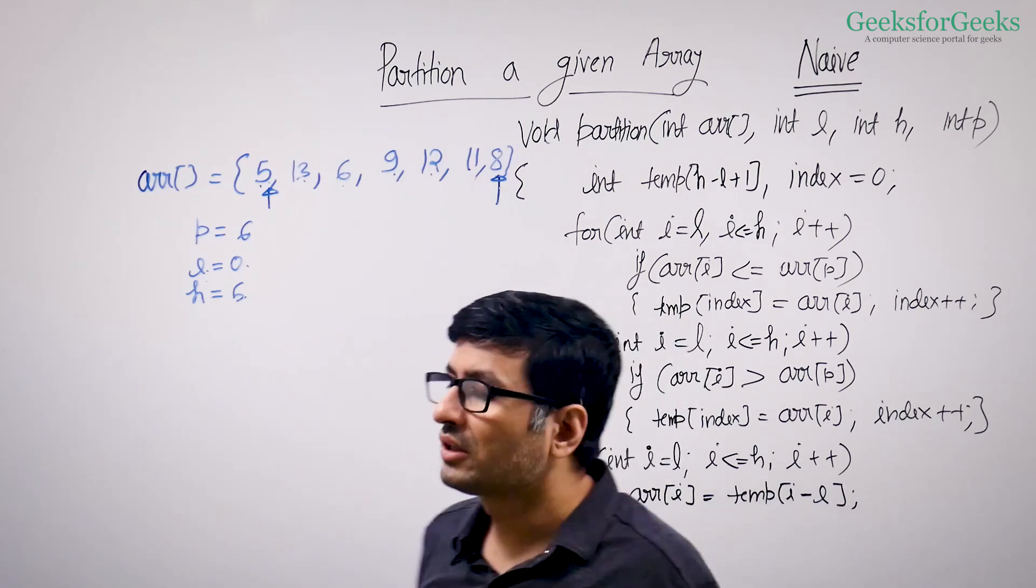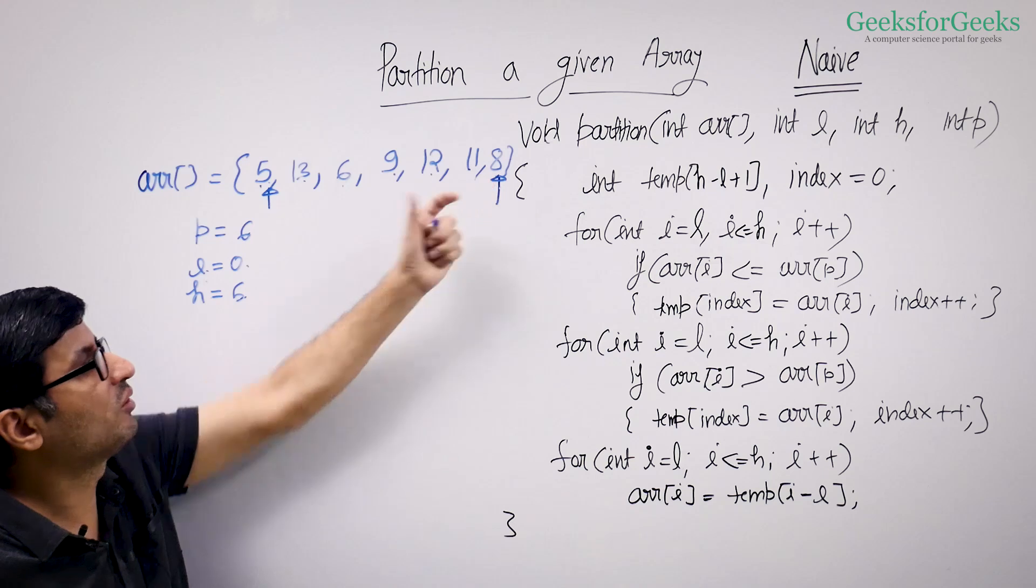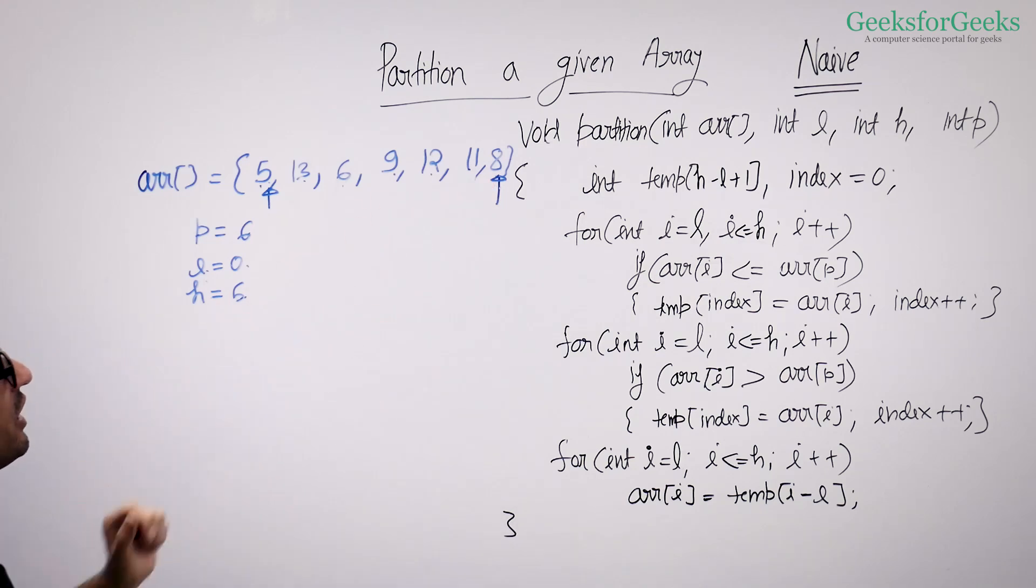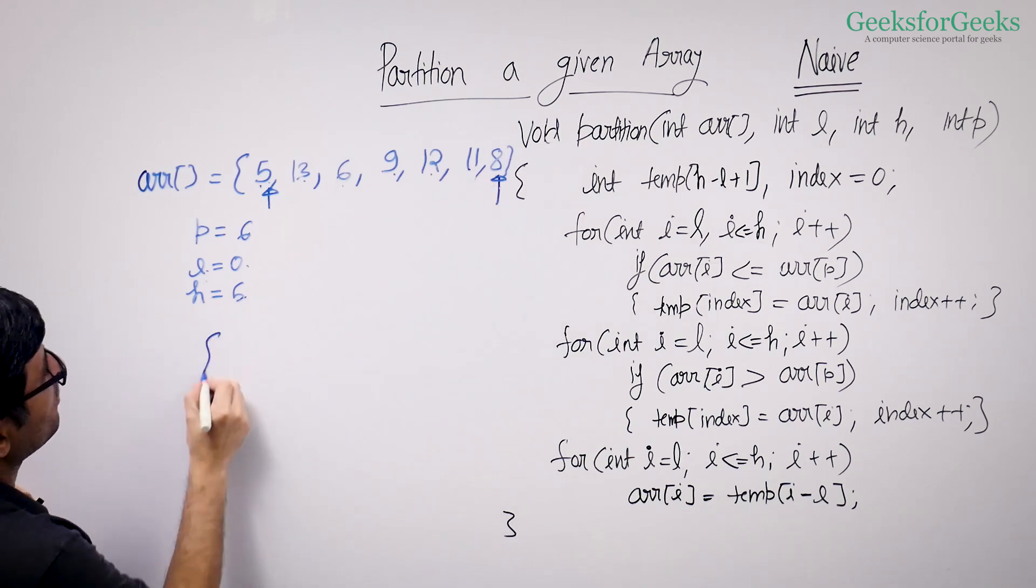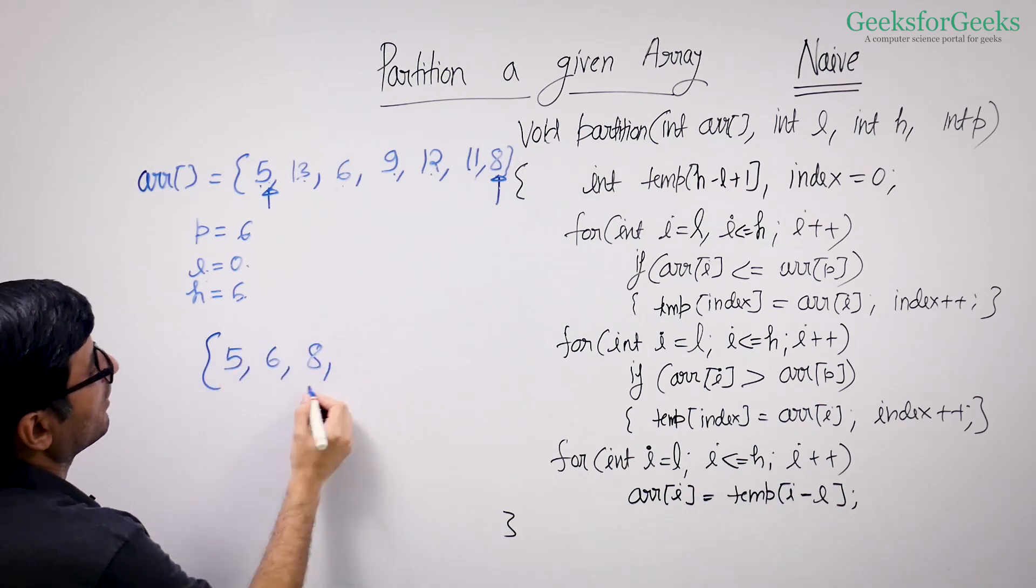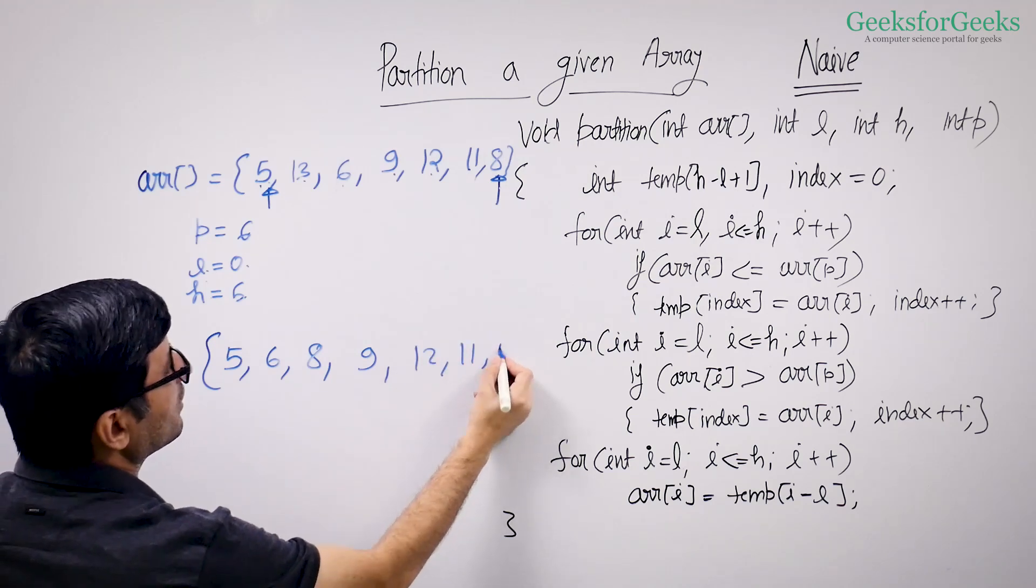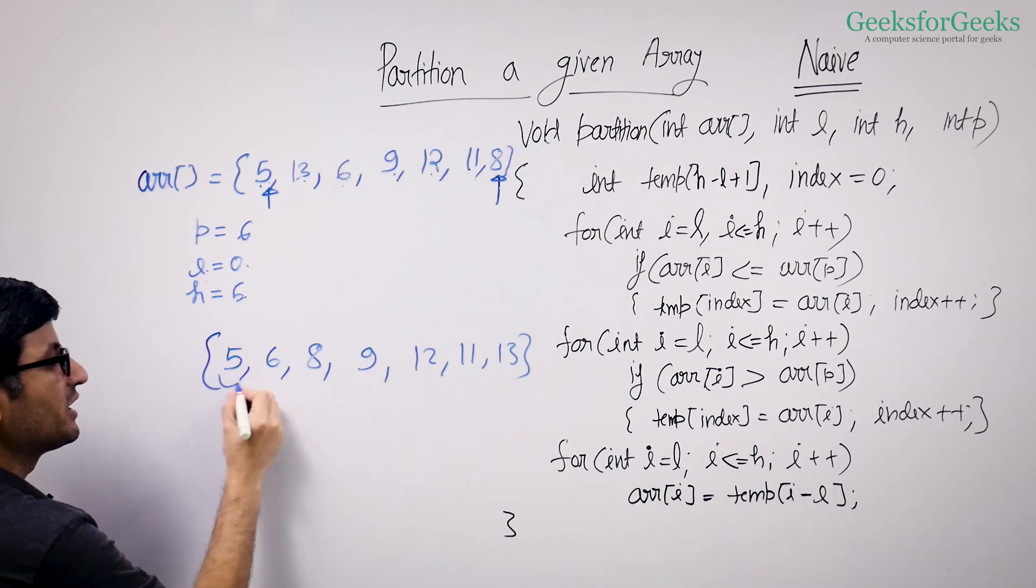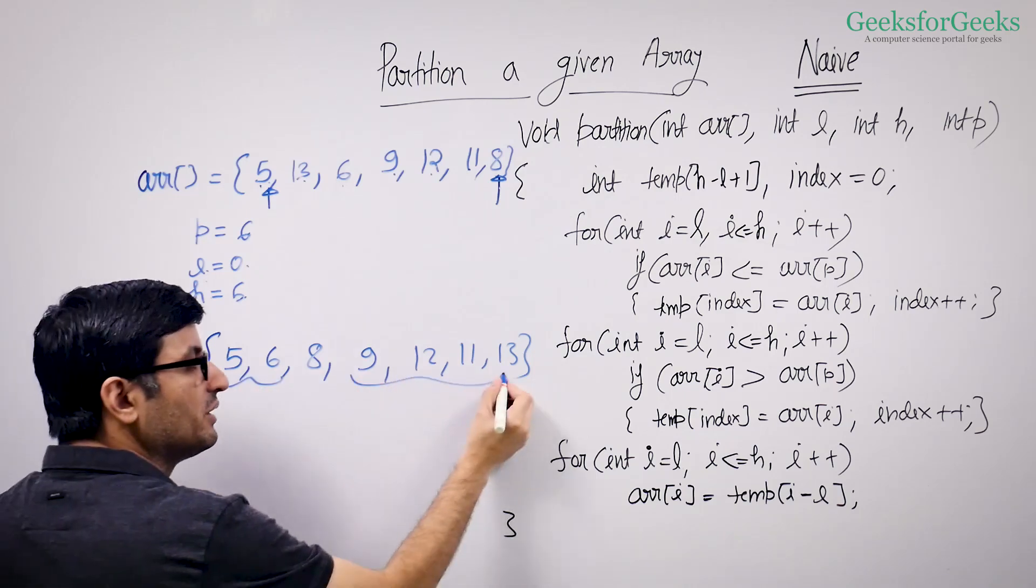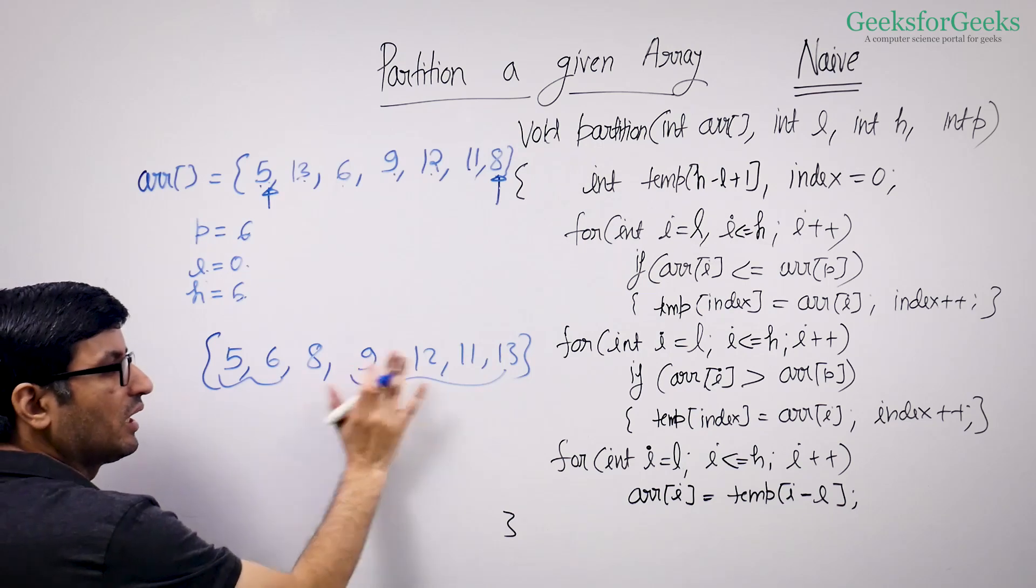So what do you want as an output? You want to put all the elements which are smaller than or equal to 8 on the left side and all the greater elements on the right side. So your output should be 5, 6, 8 and then 9, 12, 11, and 13. These elements can come in any order, these elements can come in any order, but they should come before it and they should go after it.